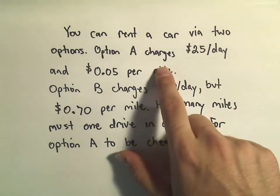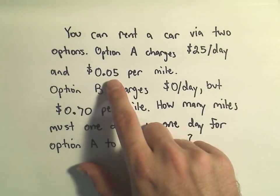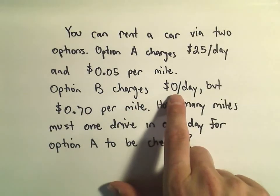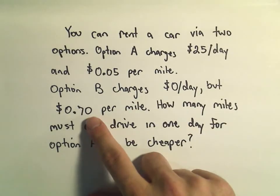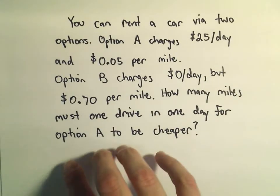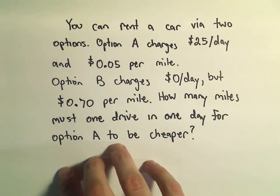You're going to rent a car and either option A charges you $25 a day and $0.05 a mile, or option B charges you $0 a day, but they charge you a lot more per mile. They charge you $0.70 per mile. And we want to know how many miles must one drive in one day for option A to be cheaper.